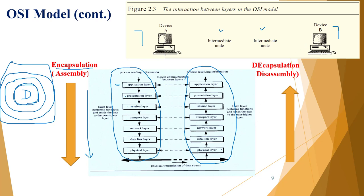At the destination (Device B), the bits are received and passed up to the data link layer. Each layer removes what was added by its corresponding layer on the sender side — one by one — until the data reaches the application layer. This reverse process is called decapsulation or the disassembly process. Encapsulation happens at the source; decapsulation happens at the destination.